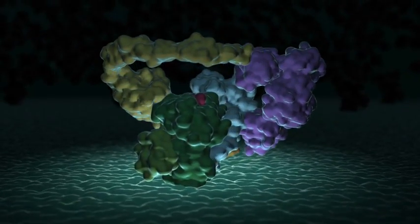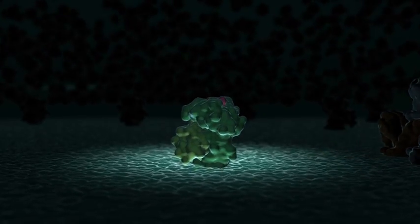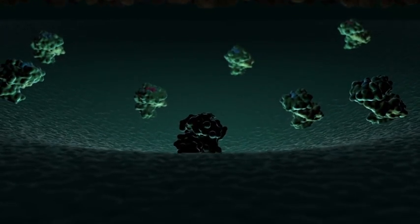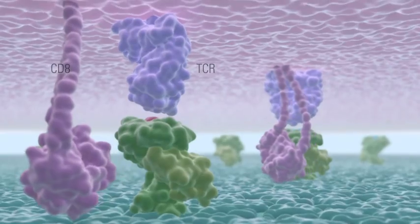The newly peptide-loaded MHC class 1 molecule proceeds along the cell's secretory pathway and is displayed at the surface, where it is examined by receptors on cytotoxic T cells.